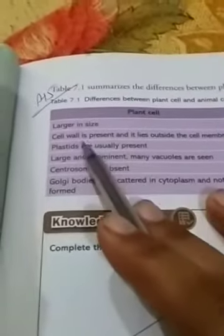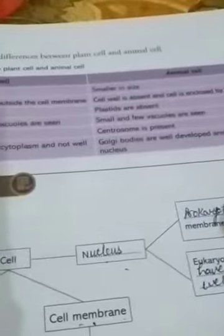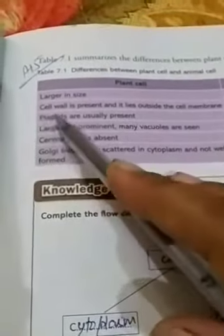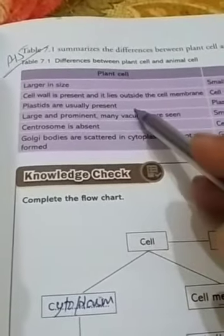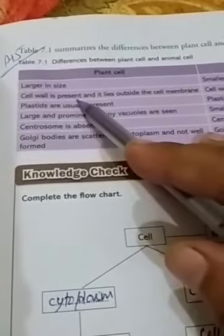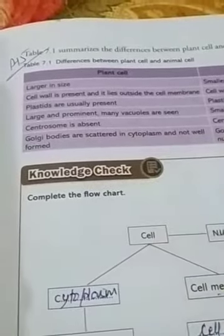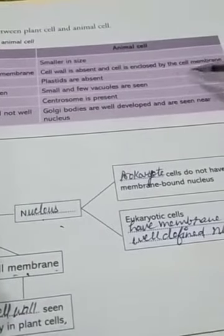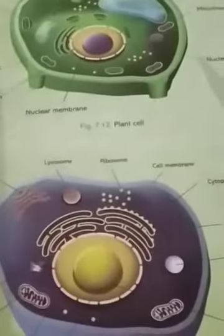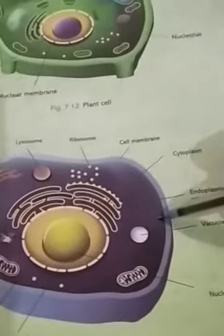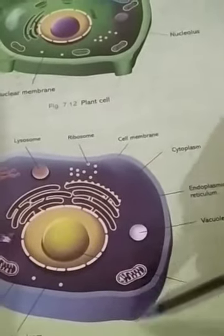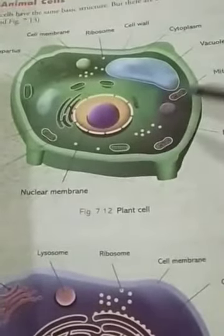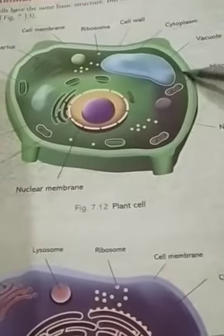Now we are going to discuss the differences between both of them. First: plant cell is larger in size while the animal cell is smaller in size. Second difference: cell wall is present in the plant cell and it lies outside the cell membrane. While in the animal cell, the cell wall is absent and the cell is enclosed only by the cell membrane. Looking at the figure, in the animal cell the outermost layer is the cell membrane.